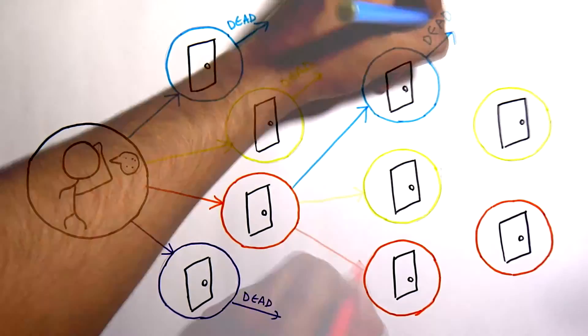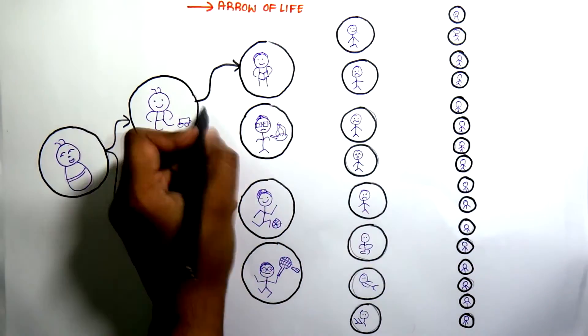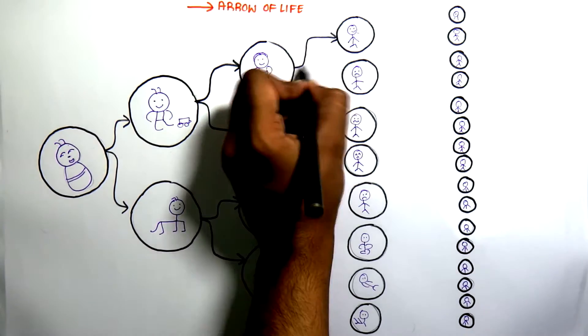So all of the possible events happen, but this version of you seems to travel only through one of the many possible available timelines. So we can plot our entire life on the basis of this theory.